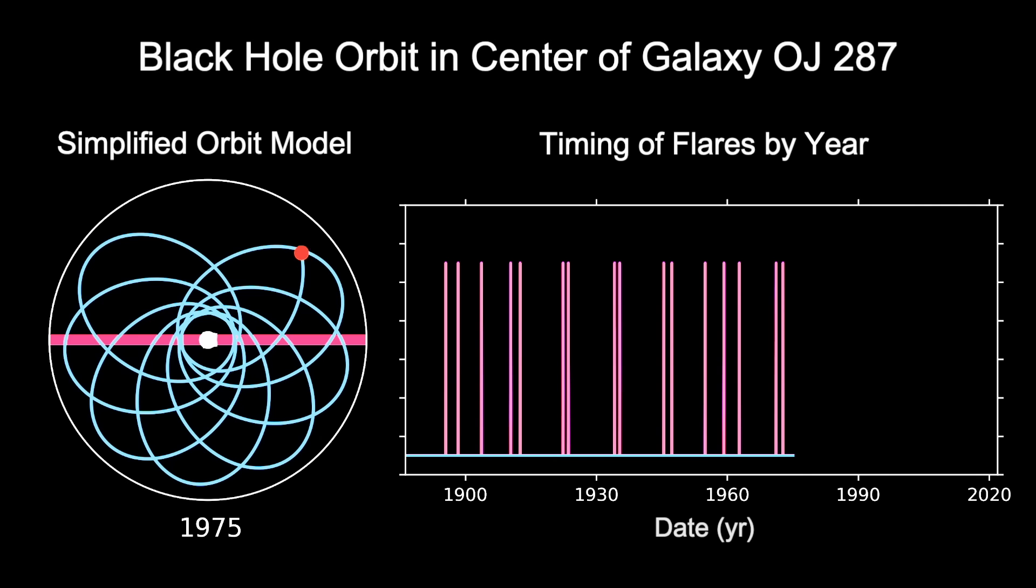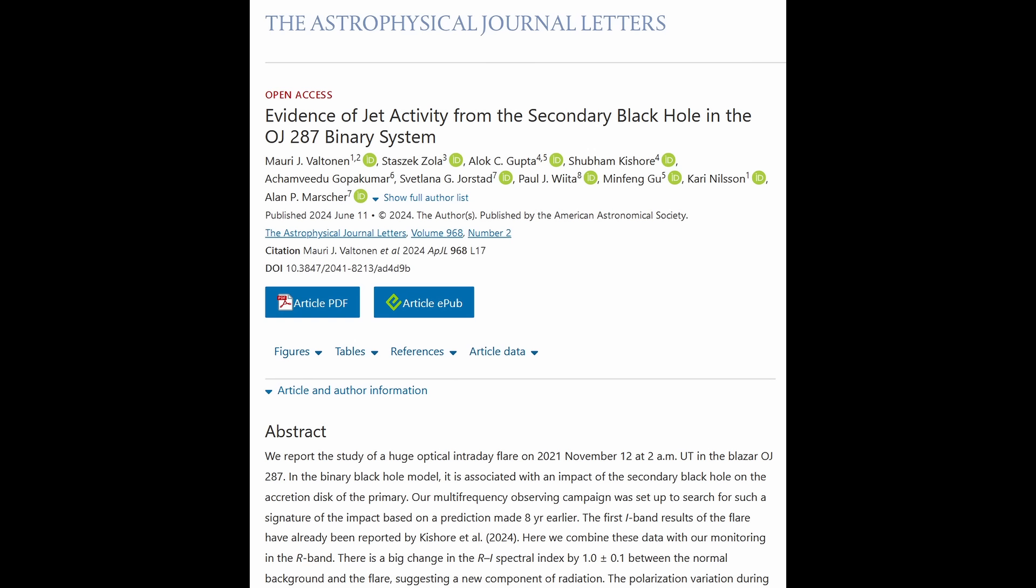Over the years, further observational evidence and refined models have strengthened the case for a binary black hole system in OJ-287. In a new paper, researchers presented their findings on a recent significant flaring event. The study focused on the optical and radio observations conducted during the flare and provides a detailed analysis of the accompanying spectral changes.